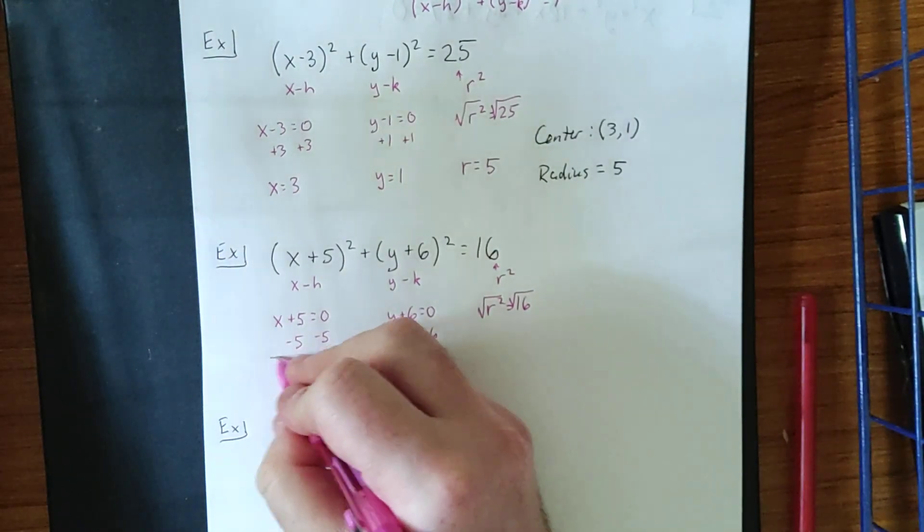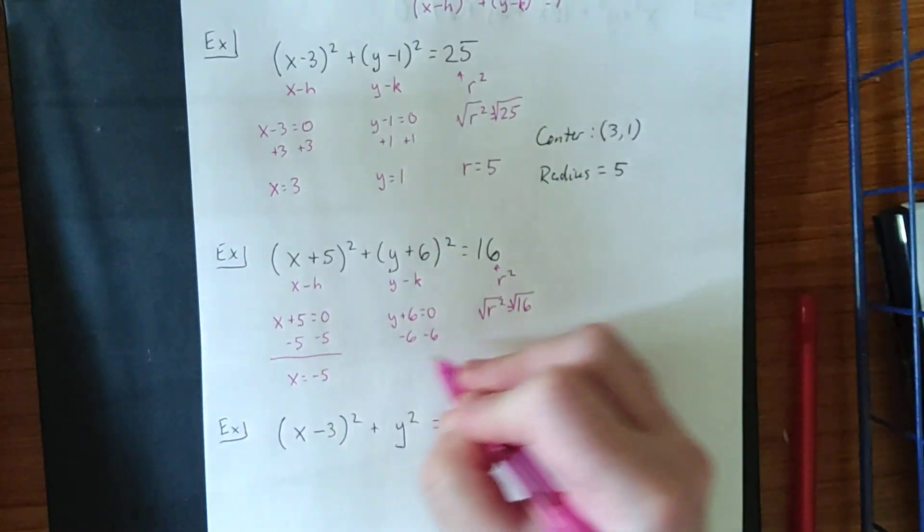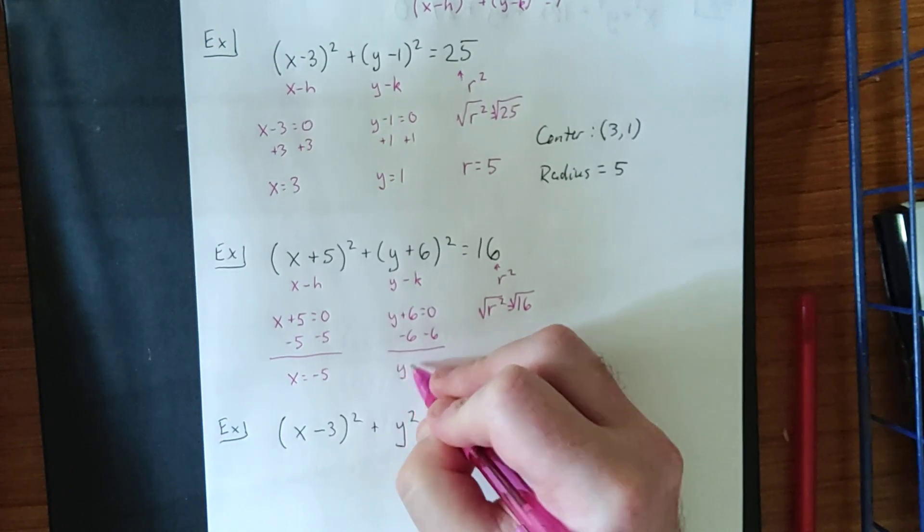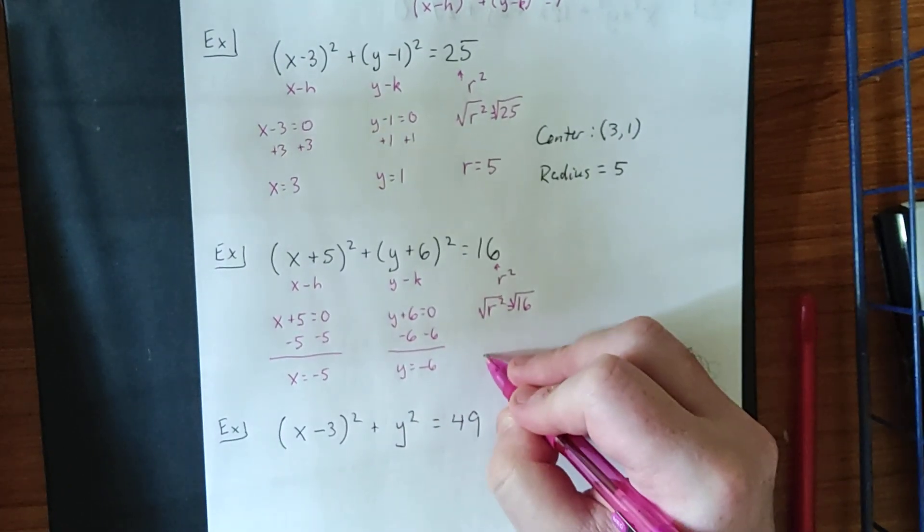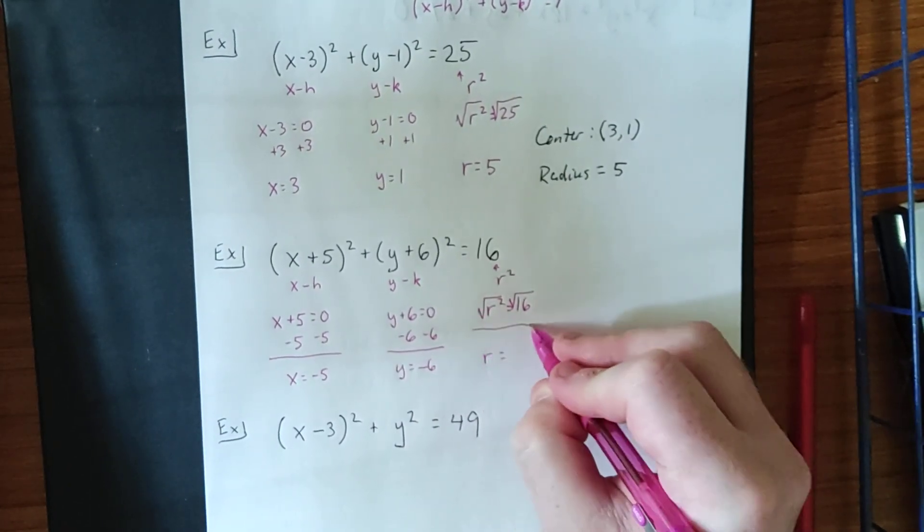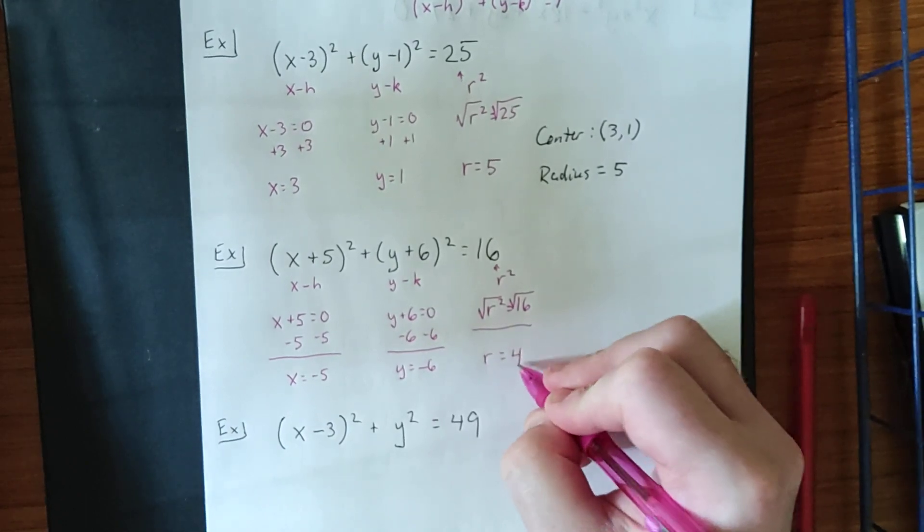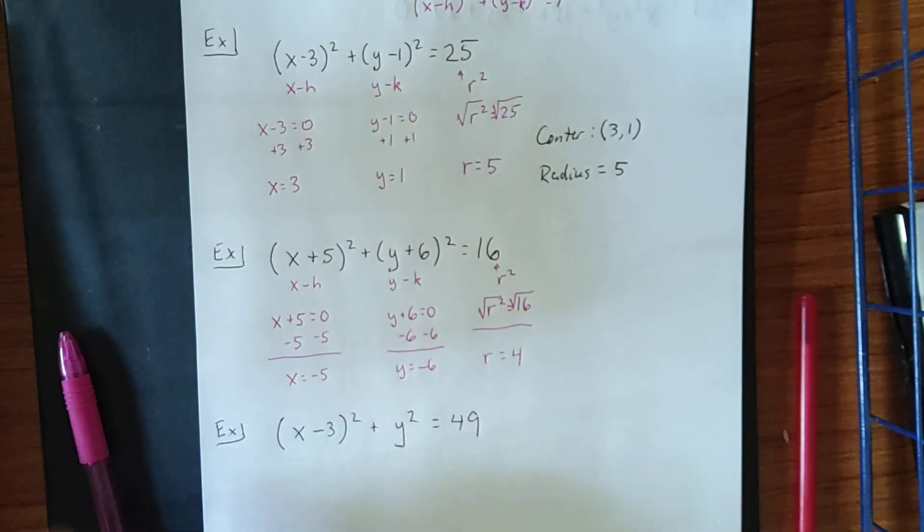When we solve for each of these, we'll get x is equal to negative 5. We'll get y is equal to negative 6. And once again, we don't need a plus or minus in front of our square root. We'll simply call that positive 4.